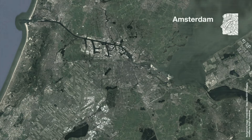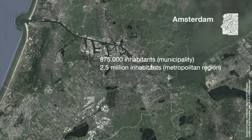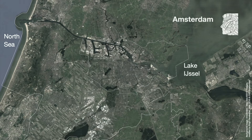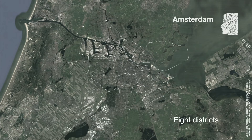We take a closer look now at the city of Amsterdam. Currently home to about 875,000 inhabitants, with more than half of them having migrated there. Amsterdam is the core of the metropolitan region with about 2.5 million inhabitants, embedded between the North Sea in the west and the IJmeer Lake in the east. The city grew concentrically and is currently distinguished by 8 districts, further subdivided into different neighborhoods.